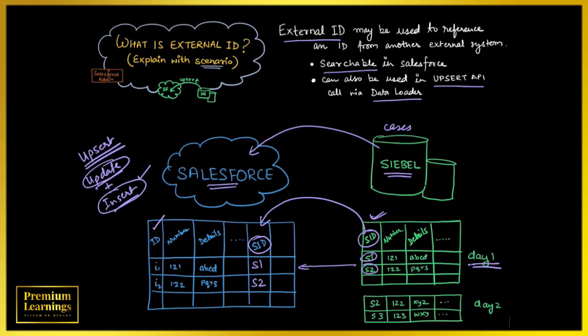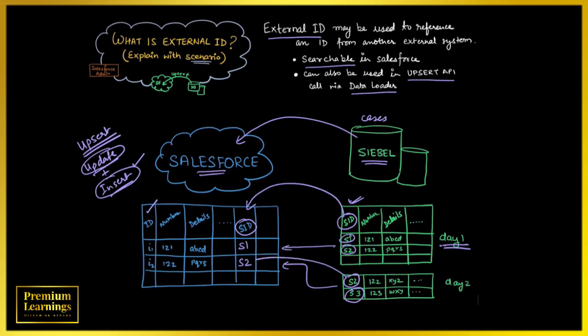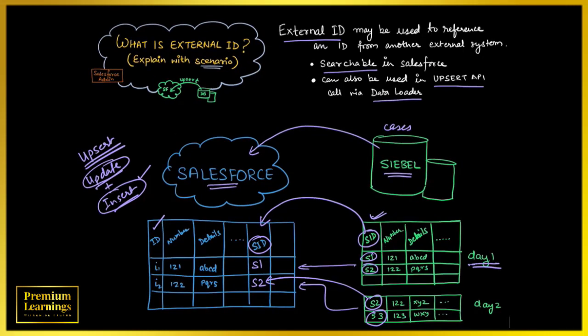On the next day, when the updated record S2 and new record S3 go into the Salesforce system, Salesforce will identify that S2 already exists, so it will update the data. S3 doesn't exist, so it will create the data accordingly.